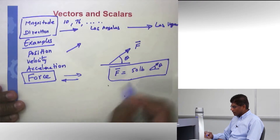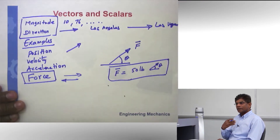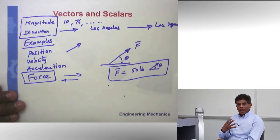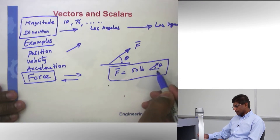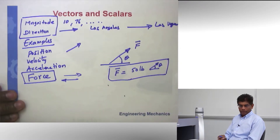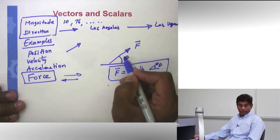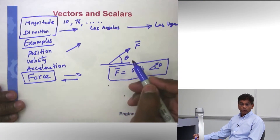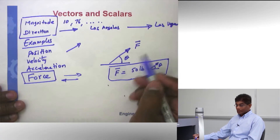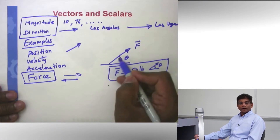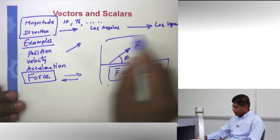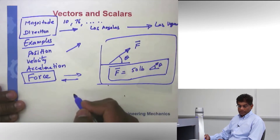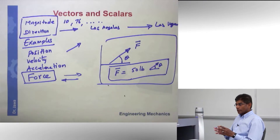Typically in engineering, we measure the angle from the x-axis, from the horizontal. This is a conventional way of providing the vector's magnitude and direction. Any time you are dealing with a vector, your answer must include two parts: the magnitude — in this case 50 pounds — and the direction it makes with the horizontal. Also the sense should be shown properly with an arrow. If you miss an arrow, it is not a vector. In engineering, we want to speak a common language across the world, so it's very important you follow the notations.